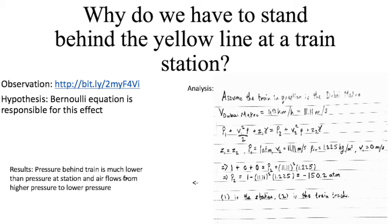So what we did is that we wrote the Bernoulli equation down. We assumed that the train in question is the Dubai Metro train. The velocity of Dubai Metro based on what we found was 40 kilometers per hour, which when we changed it to meters per second came out to be 11.11.